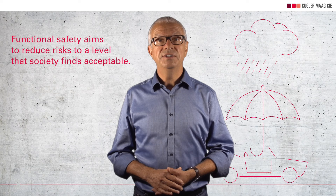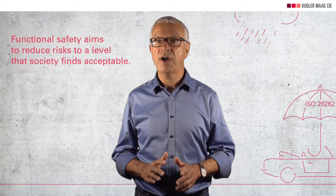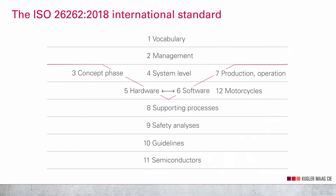Functional safety, as defined by ISO 26262, aims to reduce the risk of software and electronics to a very low level that society finds acceptable. In this video, I will introduce you to the formal structure of ISO 26262, Road Vehicles Functional Safety. The up-to-date second edition of the standard consists of 12 parts. I'll explain how you can safeguard the functional safety of your products by using these parts together.